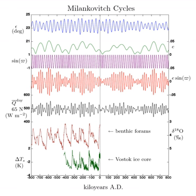Apsidal precession: In addition, the orbital ellipse itself precesses in space, in an irregular fashion, completing a full cycle every 112,000 years relative to the fixed stars.